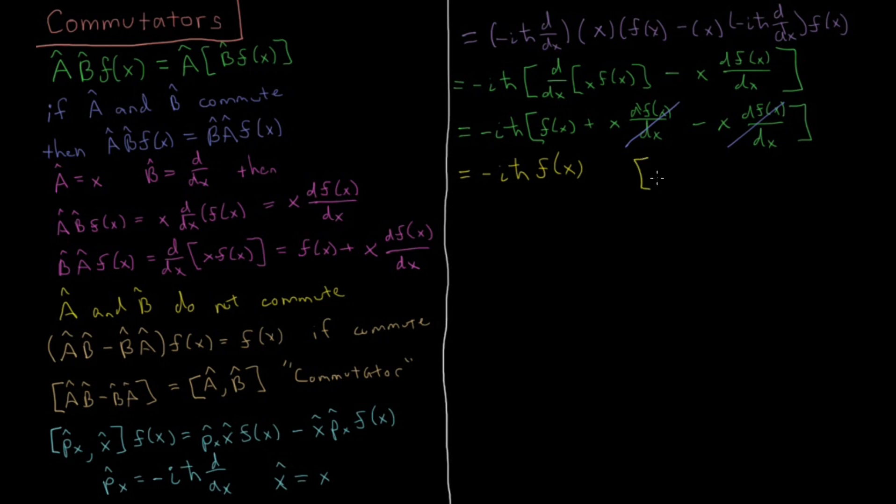The commutator of momentum and position, noting that we were acting on some f of x from the beginning, removing that f of x now just to see what the operator was, the commutator of those two is going to be minus i h-bar.